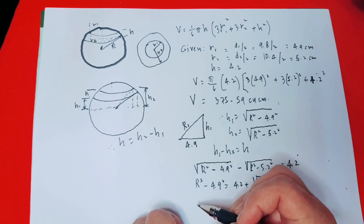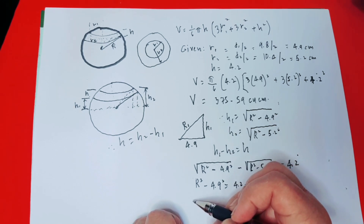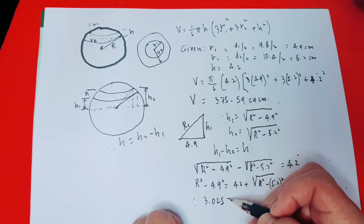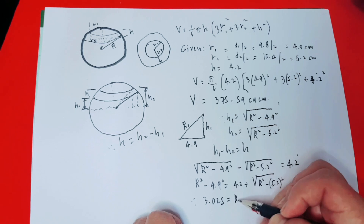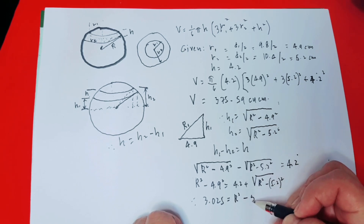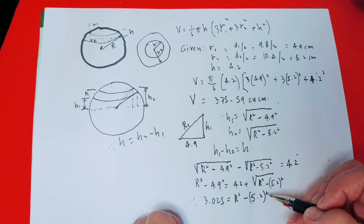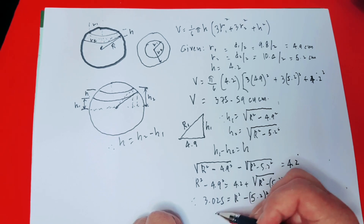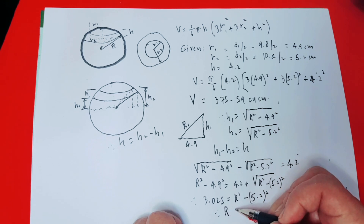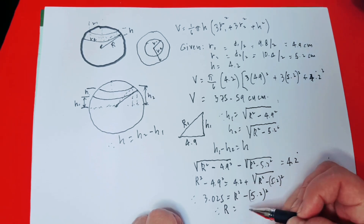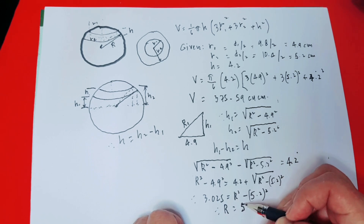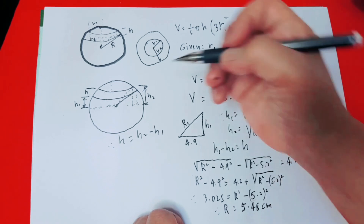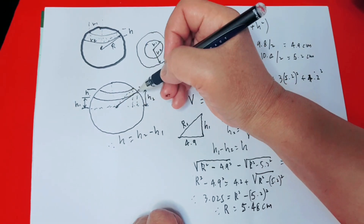Therefore substituting the values of h1 and h2 into h2 minus h1 equals h, and simplifying, we get: the square root of r squared minus 4.9 squared, minus the square root of r squared minus 5.2 squared, equals 4.2. Solving this equation gives r equals 5.48 centimeters. This is the radius of the sphere.